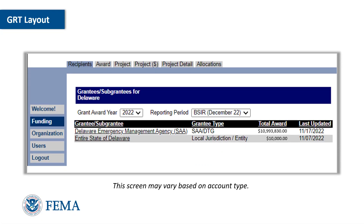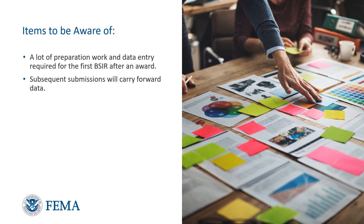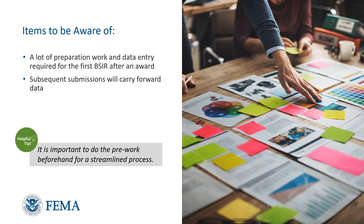After logging into the GRT platform, users will see the following user layout. Note, this screen may vary based on account type. On this screen, there are tabs located down the left side and across the top of the screen. Users will progress through the tabs across the top to enter a report into the GRT system. There will be a lot of preparation work and data entry required for the first VISR submission after an award. Subsequent submissions will carry forward data entered into the previous submission, eliminating the need for re-entry of information. It is important to do the pre-work beforehand for a streamlined process.